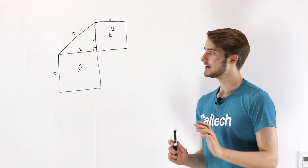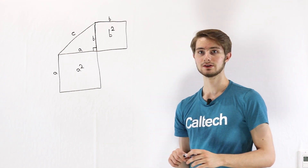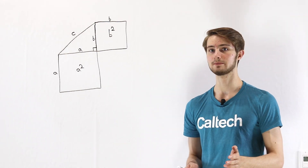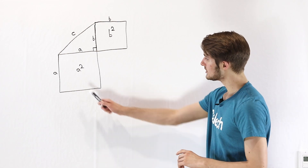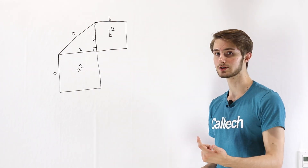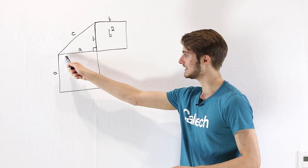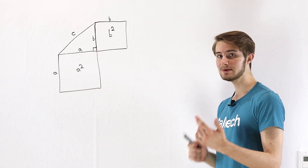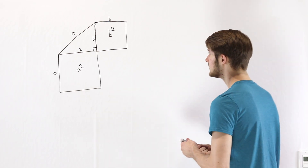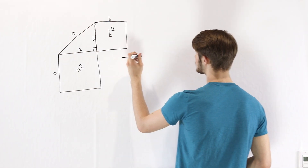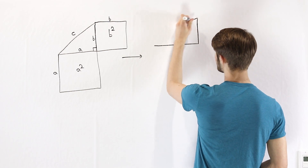Remember that the area of a square is base times height, but the area of a parallelogram is also base times height. So if we turn these squares into parallelograms, as long as we maintain the same base and height, they will keep the same area values a squared and b squared. So we're going to apply a transformation to the diagram that we see here.